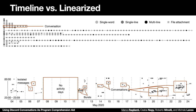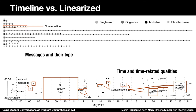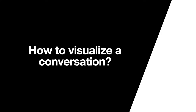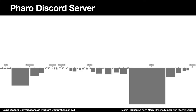Conversations thus obtained can be visualized in many different ways. We can focus on messages and their types, or on time and time-related qualities. But how can we augment the representation of a conversation to support program comprehension?